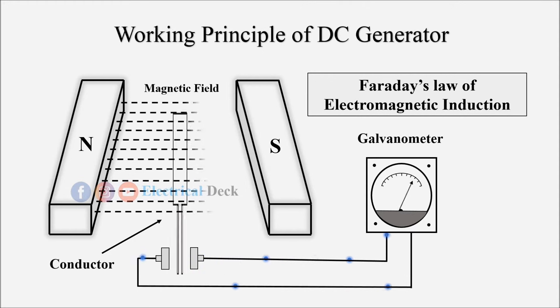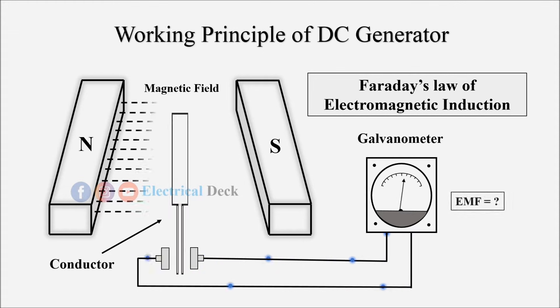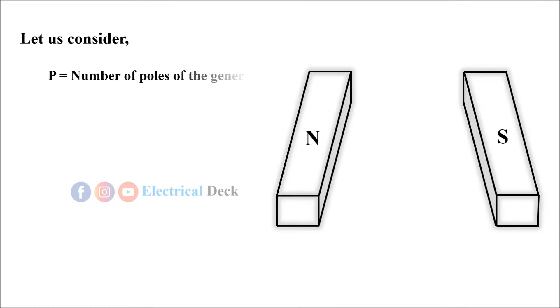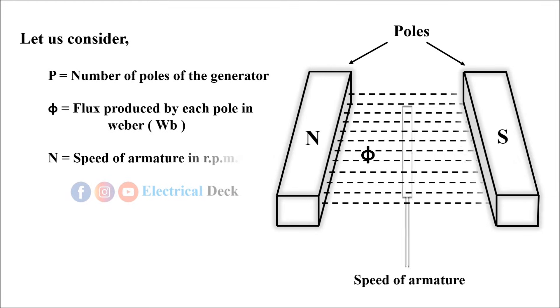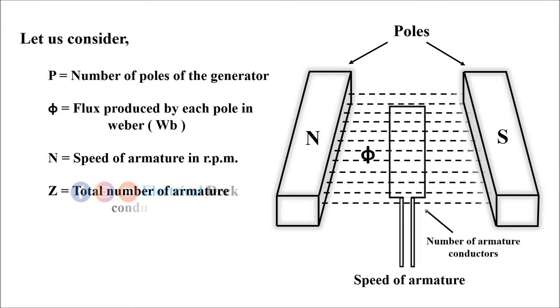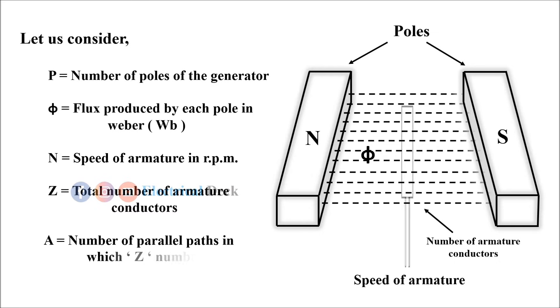Let us derive an equation for the amount of EMF produced by the generator. Let us consider: P = number of poles of the generator; φ = amount of flux produced by each pole in Weber; N = speed of armature rotating in RPM; Z = total number of conductors present in the armature; and A = number of parallel paths in which the Z conductors are divided.